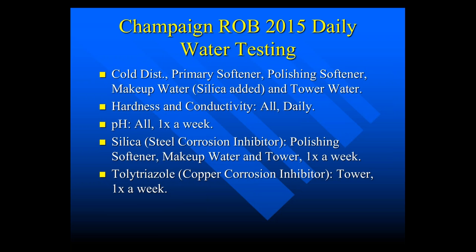Daily, we tested the cold distribution, the primary softener, the polishing softener, and then the makeup line where silica was added, and the tower water. We measured hardness and conductivity on all those samples daily, pH once a week, silica (the steel corrosion inhibitor) on the polishing softener, makeup water, and tower once a week, and tolytriazole on the tower once a week.